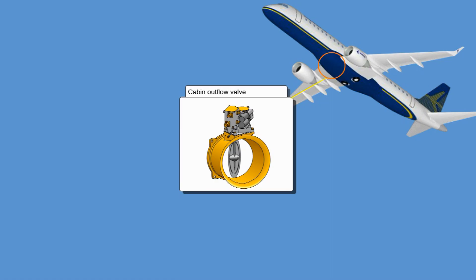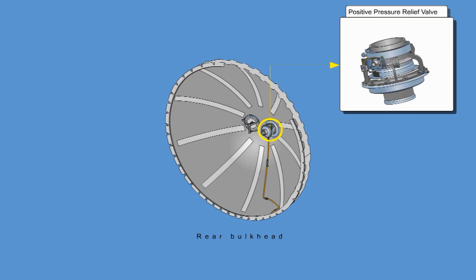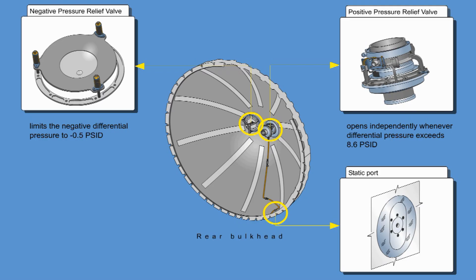The outflow valve modulates the cabin pressure by modulating airflow from the pressurized cabin into the surrounding environment. It can be controlled automatically or manually. The system also includes a pneumatically driven positive pressure relief valve, which opens independently whenever differential pressure exceeds 8.6 PSID, to protect the aircraft structure against damage due to a positive overpressure. A spring-loaded negative pressure relief valve limits the negative differential pressure to minus 0.5 PSID to protect the cabin against damage. The static pressure port senses the ambient static pressure and transmits it to the safety valve in order to allow the overpressure relief device to work. The static port is electrically heated to assure there are no obstructions of sensing orifices due to icing.